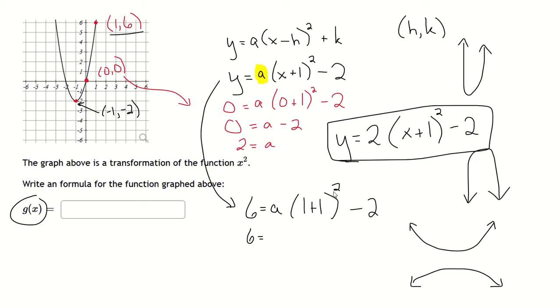1 plus 1 is 2. 2 squared is 4. 4 times a is going to be 4a. Okay, add 2 to both sides. I'll get 8 on the left. And then divide by 4 on both sides, and I'm going to get that a is 2 again.